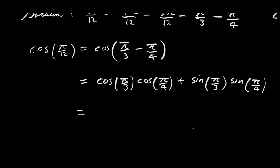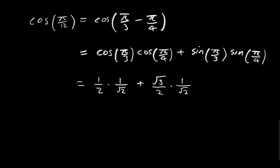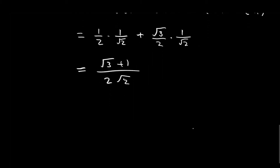If you draw your special triangles, the cosine of π over 3 is one half. All of these expressions appeared in the previous example. So we have one half times 1 over the square root of 2, plus the sine of π over 3 — which is the square root of 3 over 2 — times the sine of π over 4, which is 1 over the square root of 2. This simplifies to the square root of 3 plus 1 over 2 times the square root of 2. And rationalizing the denominator, we get the square root of 6 plus the square root of 2 over 4.